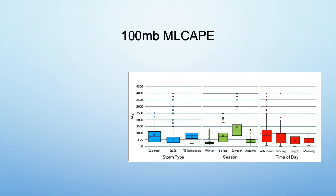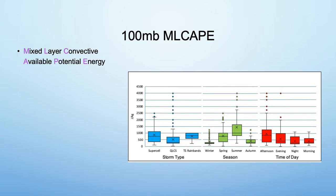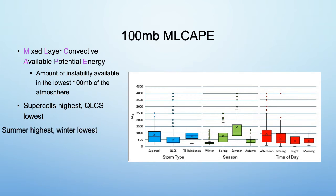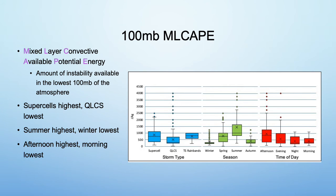Now I'll explain each parameter and associated stats, the first being 100 millibar ML CAPE. ML CAPE stands for Mixed Layer Convective Available Potential Energy, which is the amount of instability available in the lowest 100 millibars of the atmosphere. Supercells had the highest average ML CAPE and QLCSs had the lowest. Summer was the season with the highest average, whereas winter was the lowest. Afternoon was the time of day with the highest average and morning was the lowest. More heat and humidity means more energy, so these results make sense.